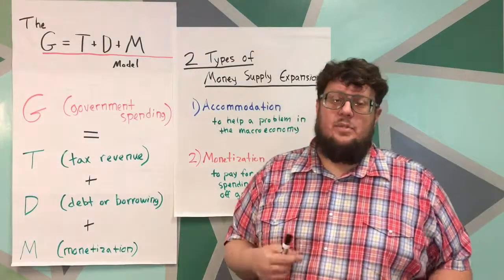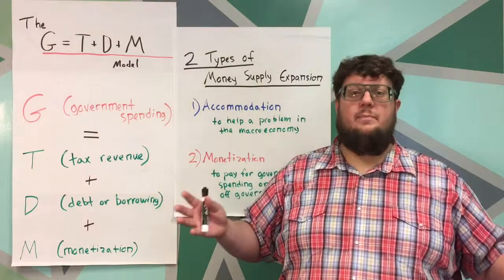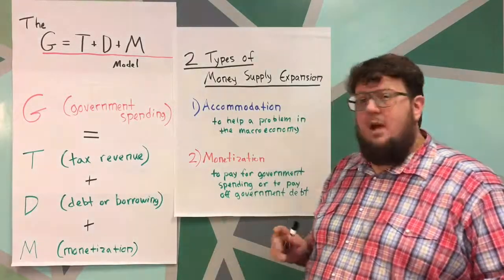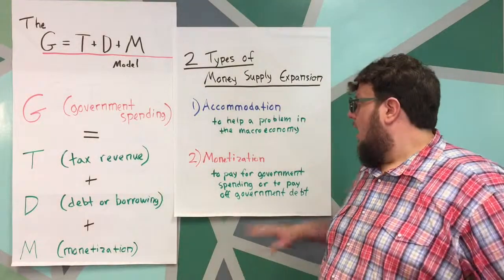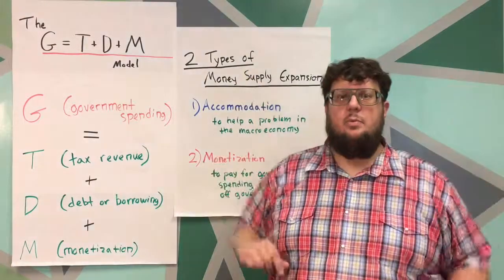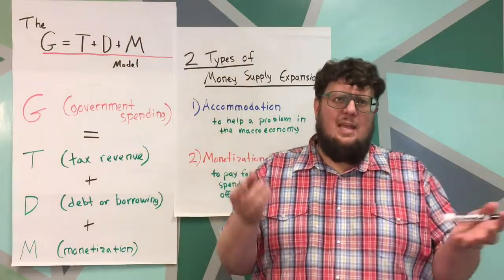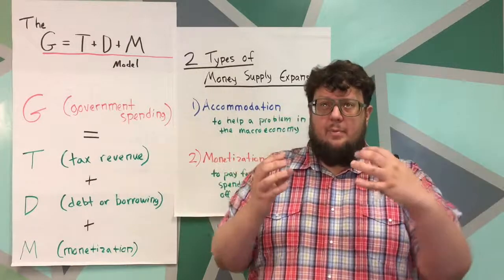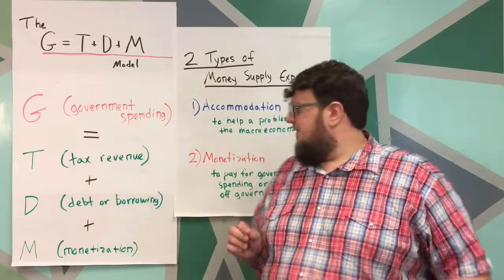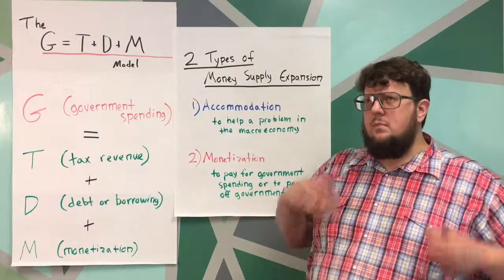For instance, during the 2007 to 2009 recession, the United States government printed all kinds of money and pushed it out in several different ways, buying several different kinds of assets. A lot of people on the internet were saying we're going to see inflation — they're printing too much money. Inflation even went negative for a while; we call that deflation. But it's not the case that inflation exploded, because the government was just trying to accommodate a problem in the economy.